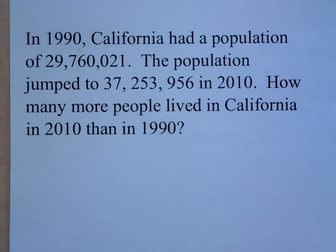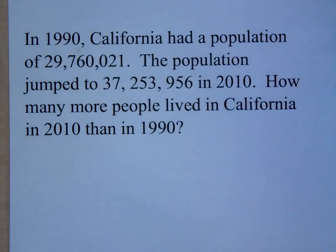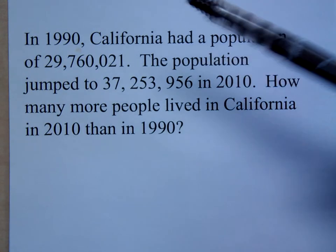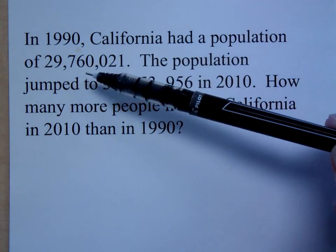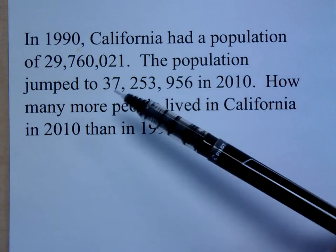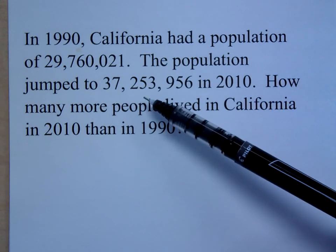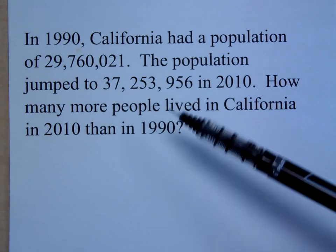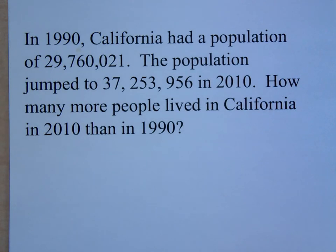Let's talk about the population of California. From 1990 to 2010, the population of California increased — from 29,760,021 to 37,253,956. The question posed to us is: how many more people lived in California in 2010 as opposed to 1990?